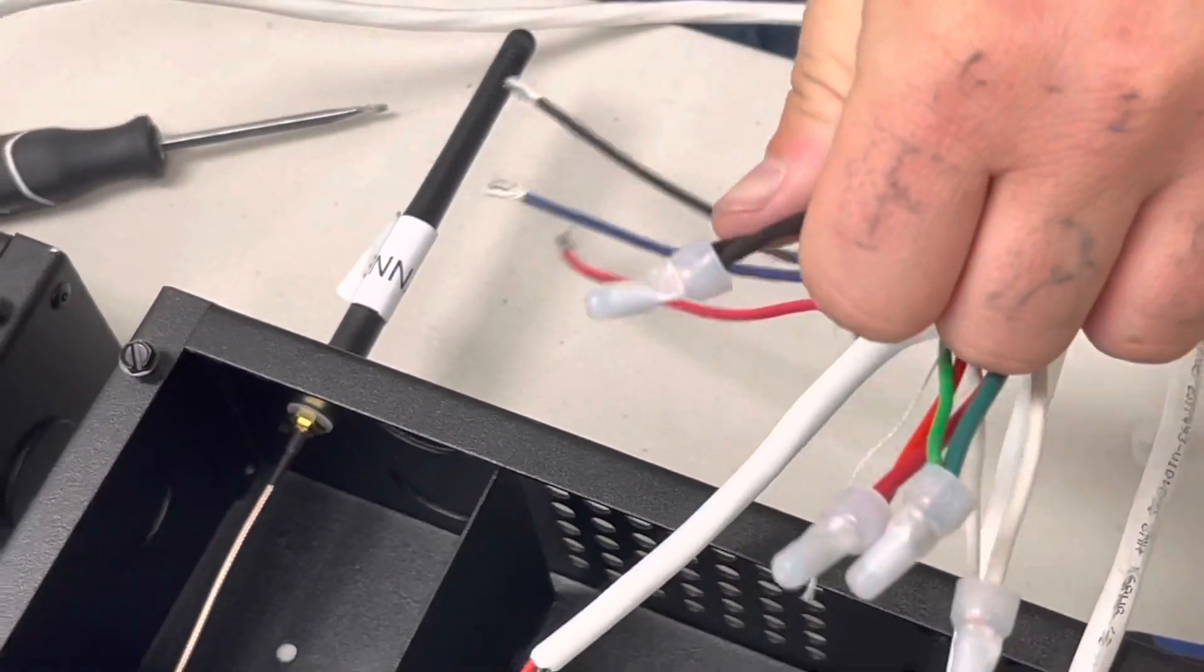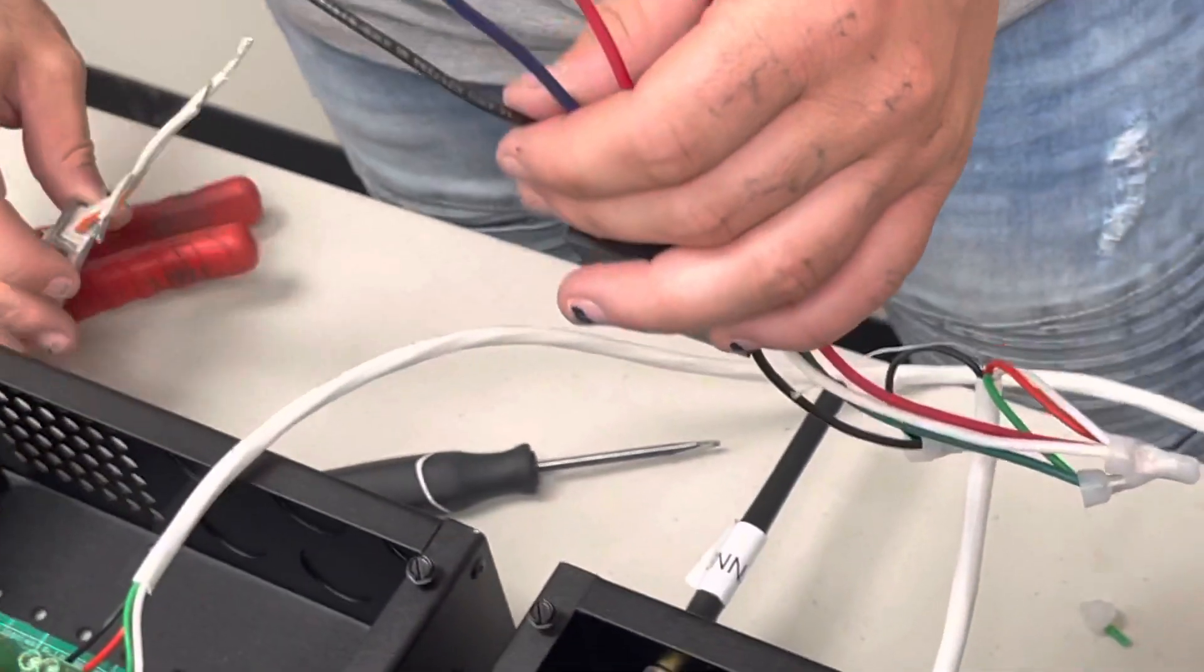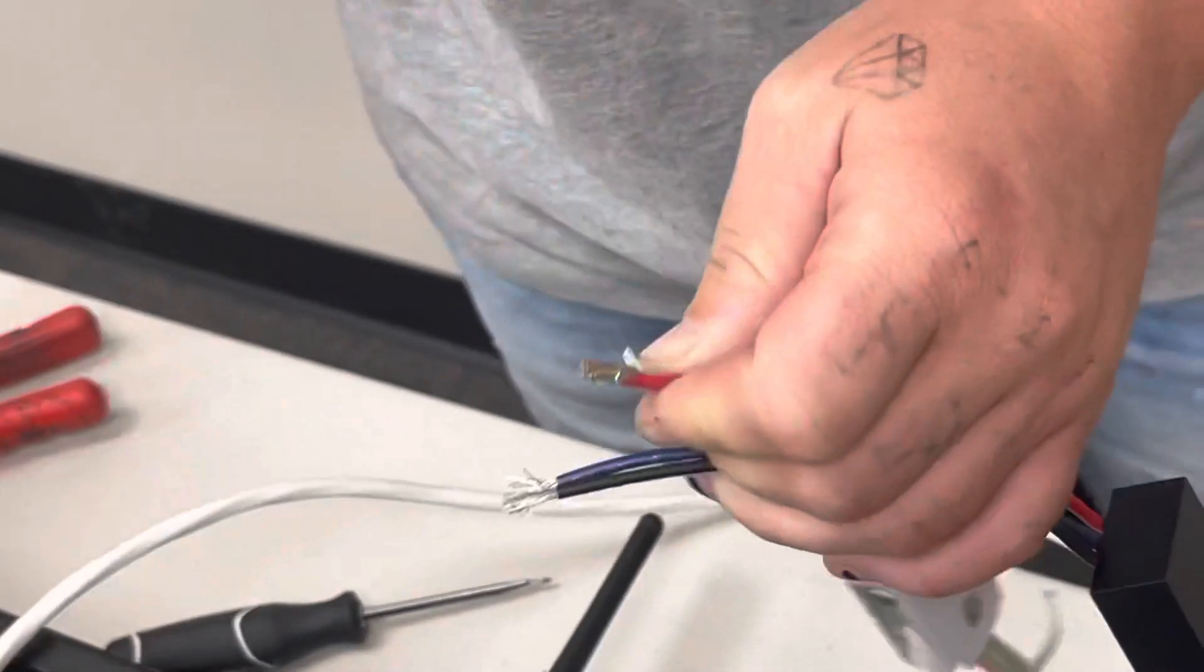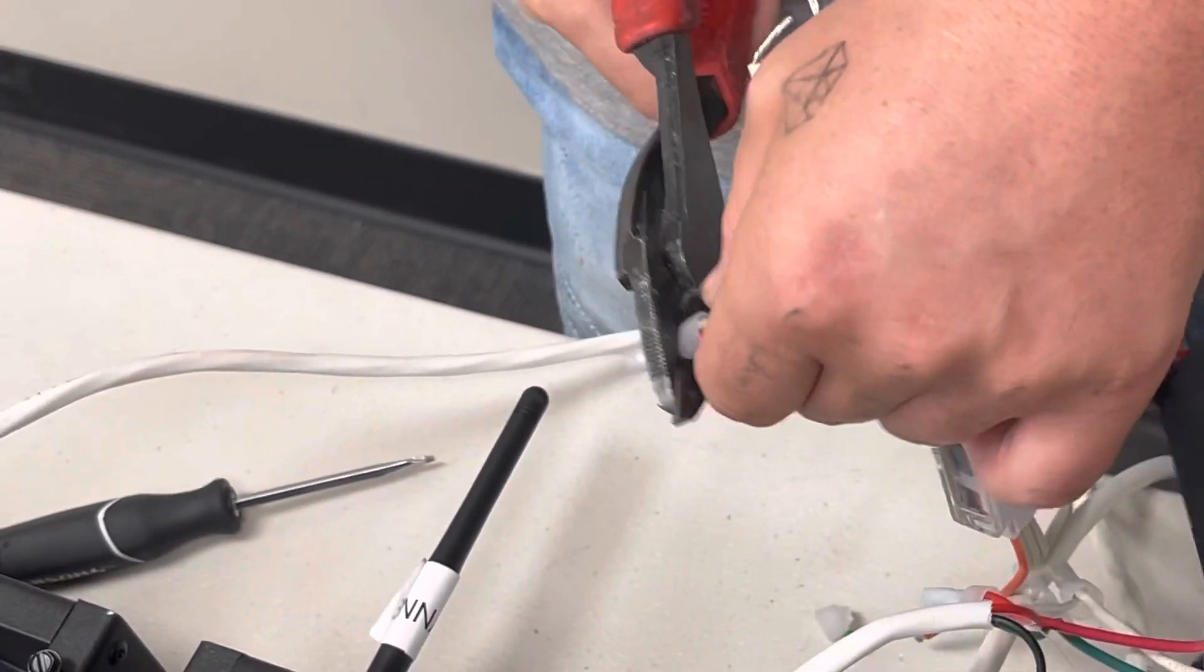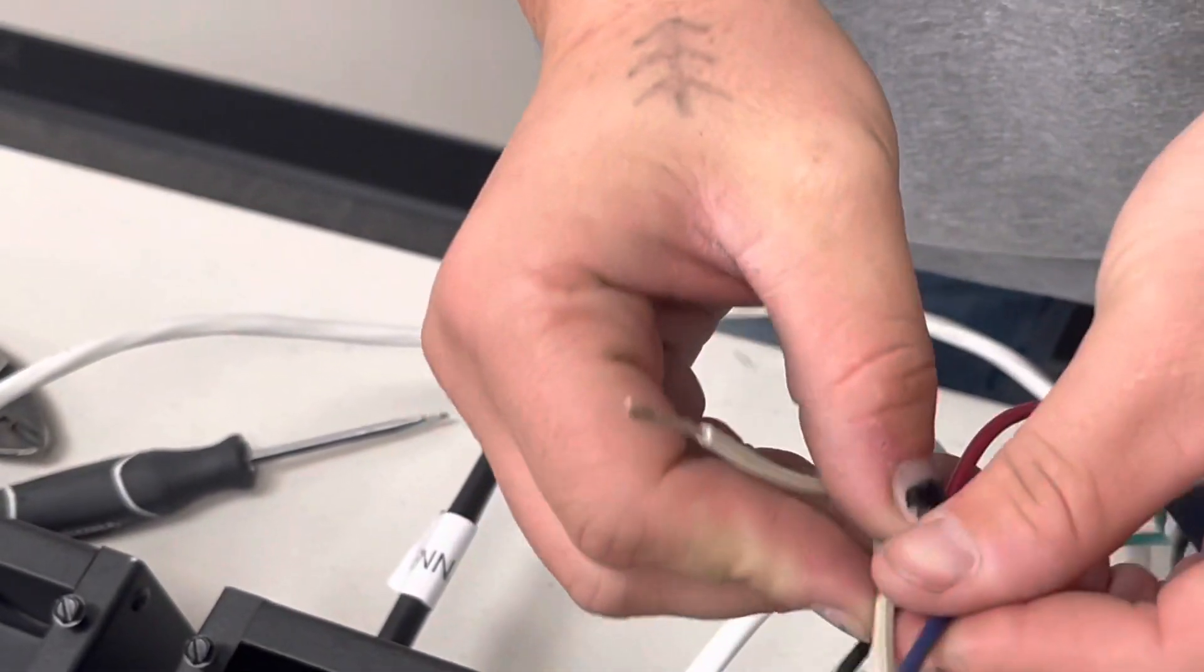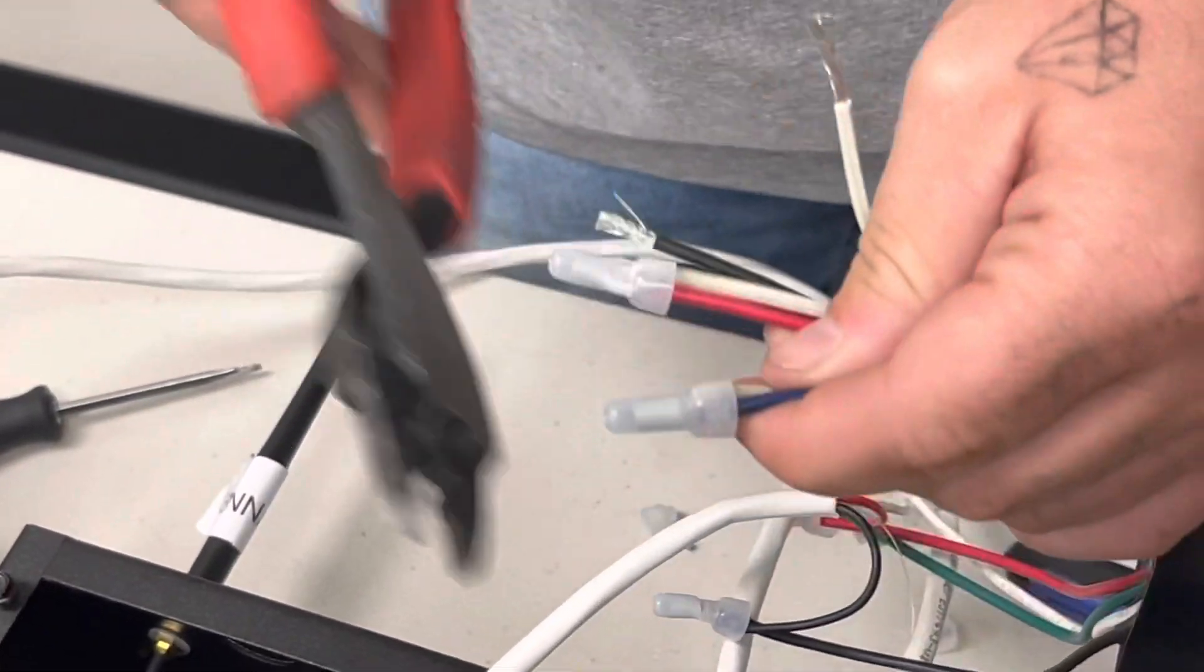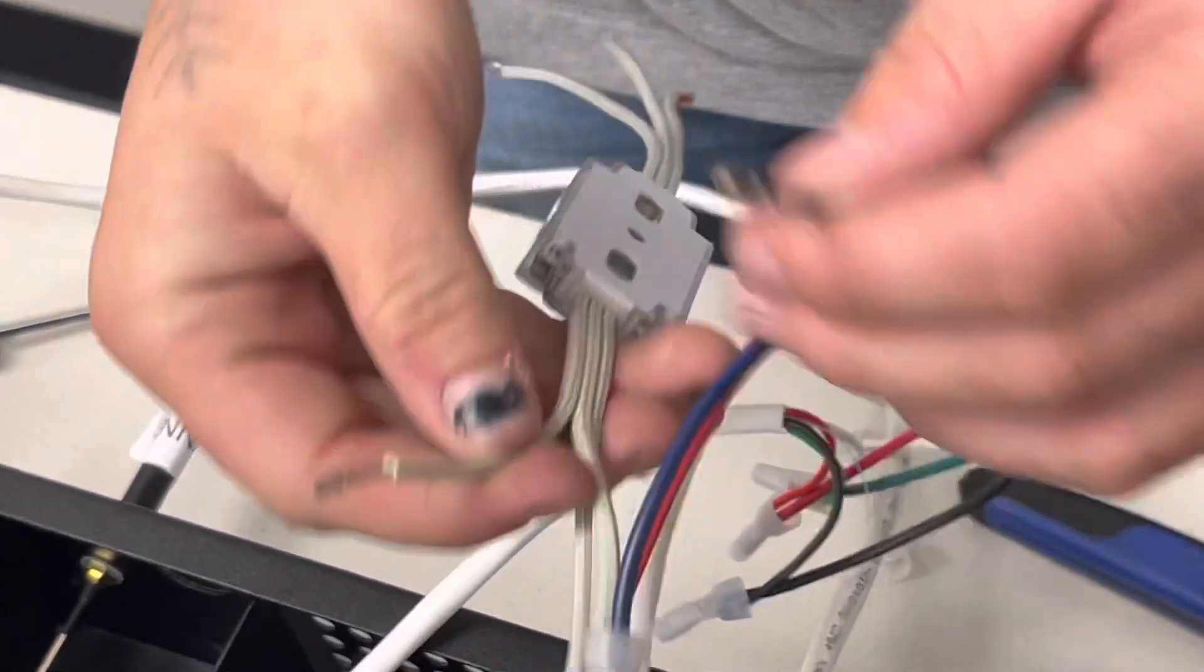Alright, and then from there we're going to tie in a light to our receiver. Make sure your arrows going the right direction with the flow. We're going to do red to red, blue is communication so that will go in the middle of your lights, and then black goes to ground on the very end of your lights.